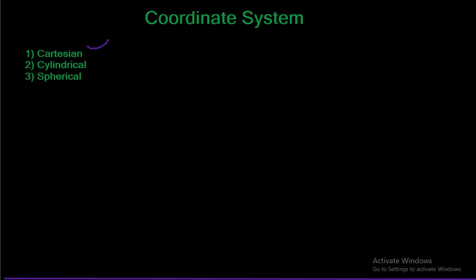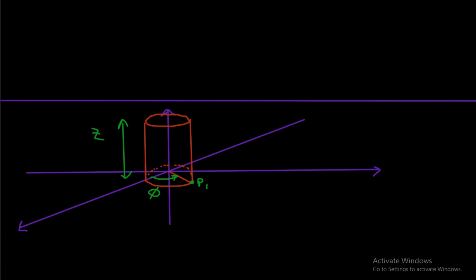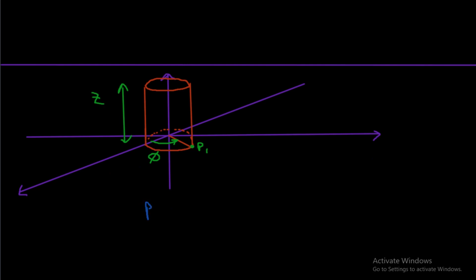Let us understand the next coordinate system — the cylindrical coordinate system. In this system, in order to move in this space, you need three parameters. The first will be the radius of the cylinder, which we call rho. The second parameter is the angle phi, which enables you to sweep the x-y plane. And in order to gain altitude or height, you need the z-value.